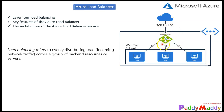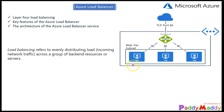Here you can see the load balancer icon within the Microsoft Azure portal. If somebody is trying to access a website — let's say contoso.com — that website's IP address is assigned to this load balancer, and there are three back-end machines, perhaps the web tier, that will respond to the user who opens contoso.com.